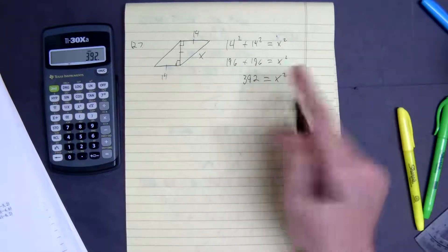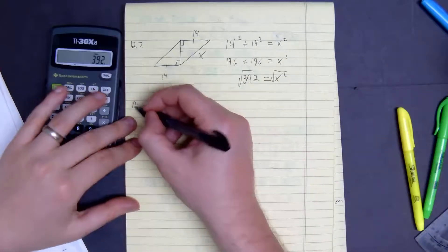So from here, we know we can't square root it, so right away it's not a Pythagorean triple.